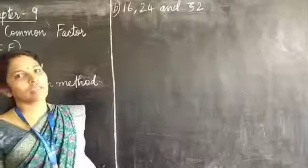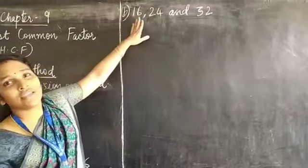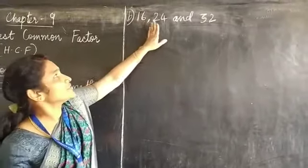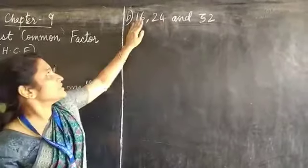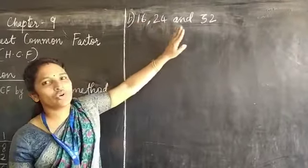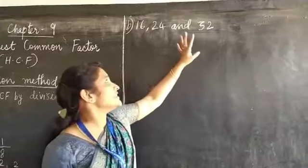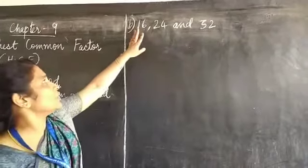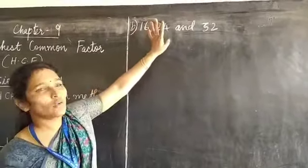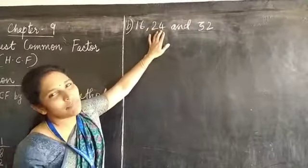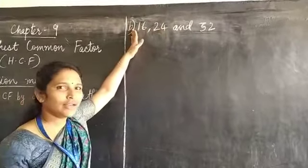Let's do one more question. Now let's find the HCF of these three numbers: 16, 24, and 32 by division method. As we said in division method, what are we going to do? First step, we are going to divide the greater number by the smaller number.